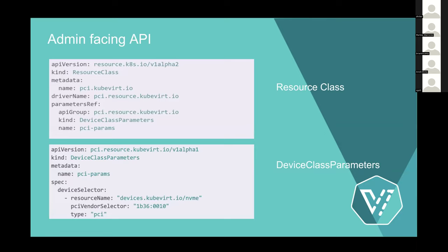How does the admin-facing API look? It is an analogy to the persistent volume claim API. Instead of a storage class, we have a resource class. In the resource class, we can reference class parameters, where we define the resource name, vendor selector, and kind of device. This is an array, so we can declare multiple devices — mimicking what we currently do in KubeVirt's permitted host devices section.